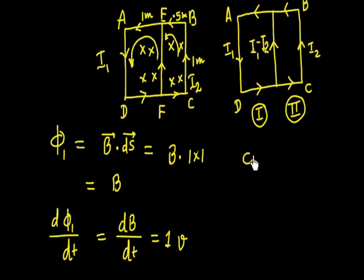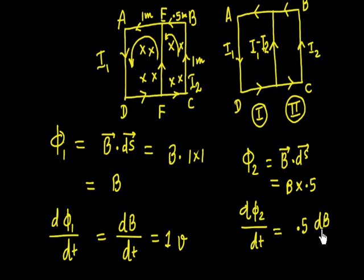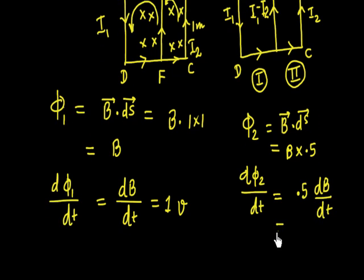For Loop 2, phi2 = B · dS. The area of Loop 2 (EBCF) is 0.5 meter × 1 meter = 0.5 square meters. So phi2 = B × 0.5. Therefore, dΦ2/dt = 0.5 × dB/dt = 0.5 × 1 = 0.5 volt. So the induced EMF in Loop 2 is 0.5 volt.